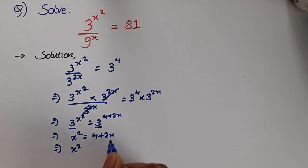Let's bring all terms together. So x² - 4 - 2x = 0. Rearranging, we have x² - 2x - 4 = 0.